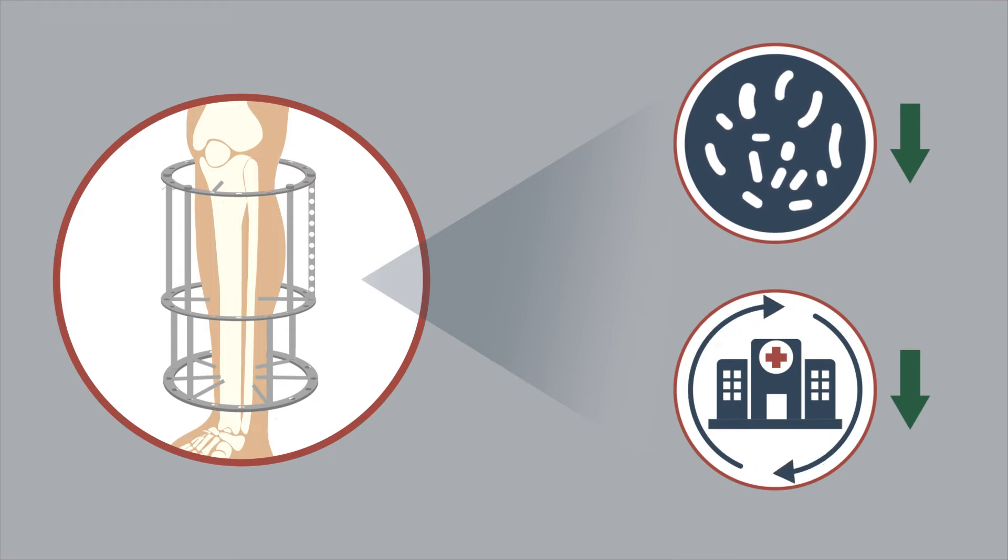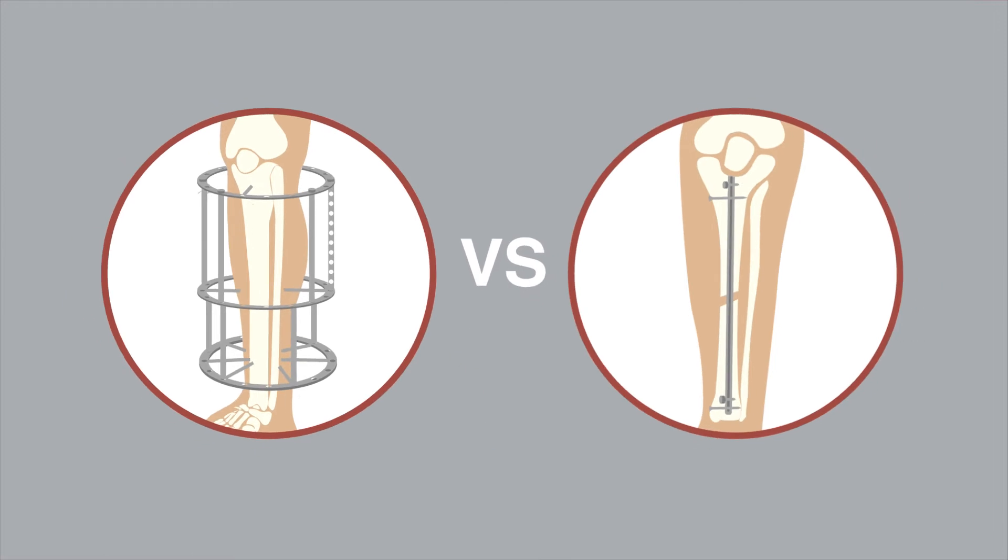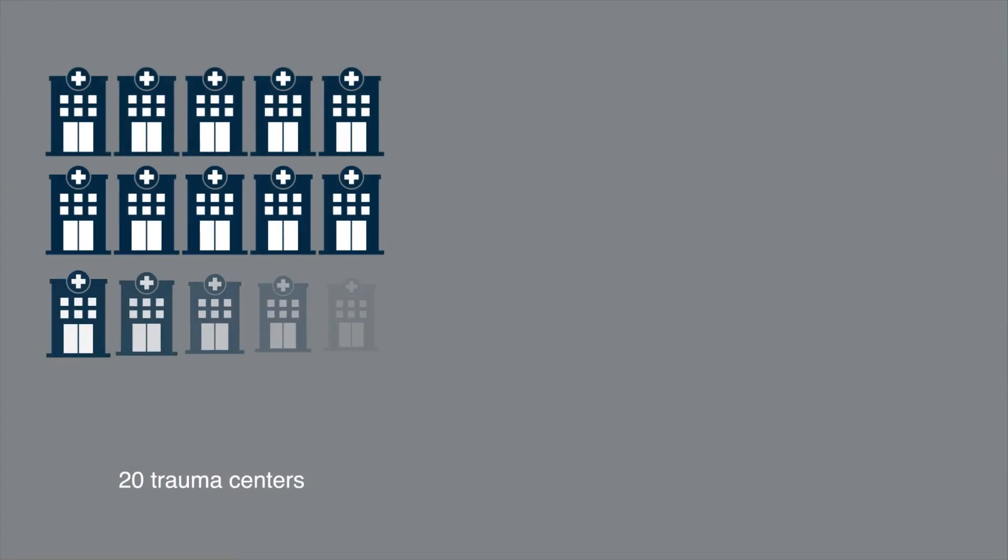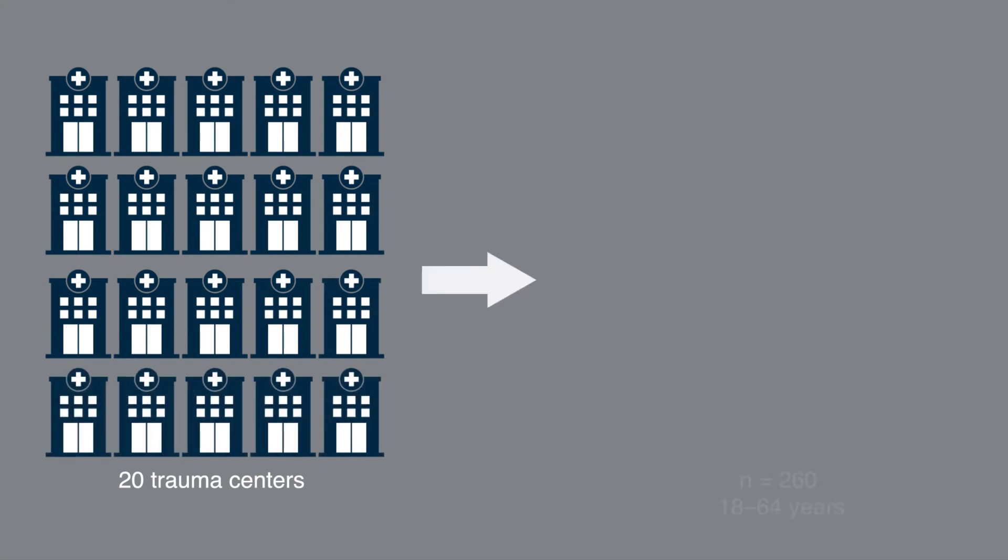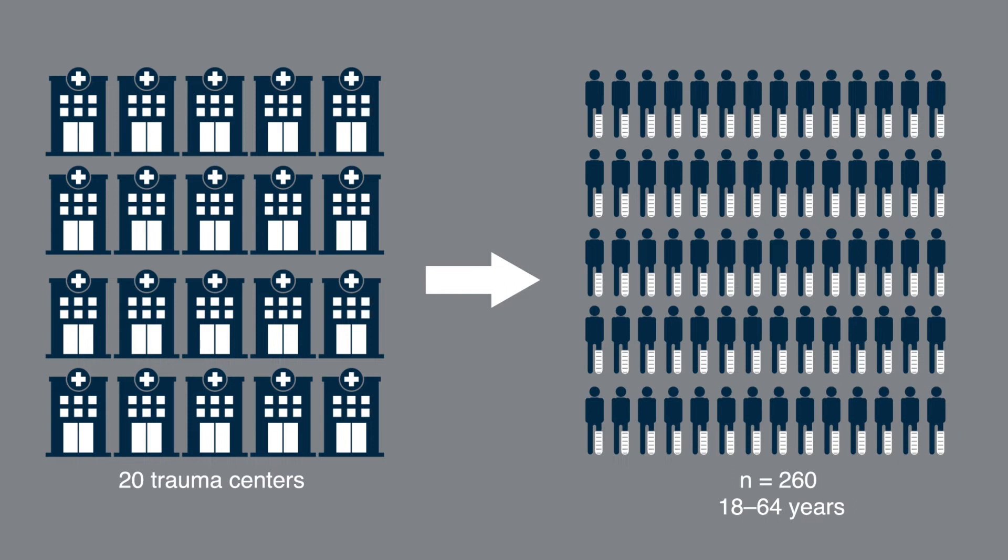To investigate this theory, researchers conducted a randomized clinical trial comparing the one-year probability of a major limb complication after treating severe open tibial shaft fractures with modern external ring fixation versus internal fixation. The trial, which was conducted at 20 trauma centers in the United States, included 260 patients aged 18 to 64 years old.